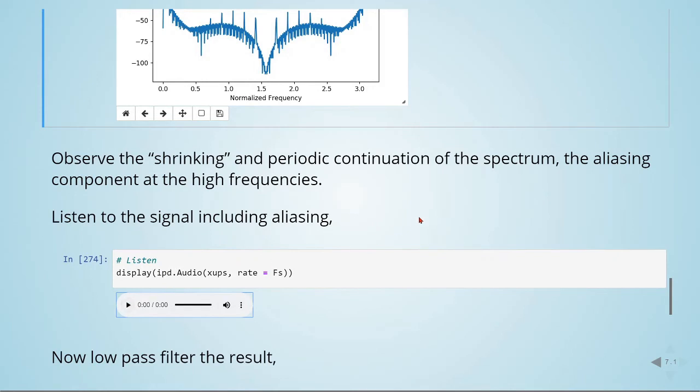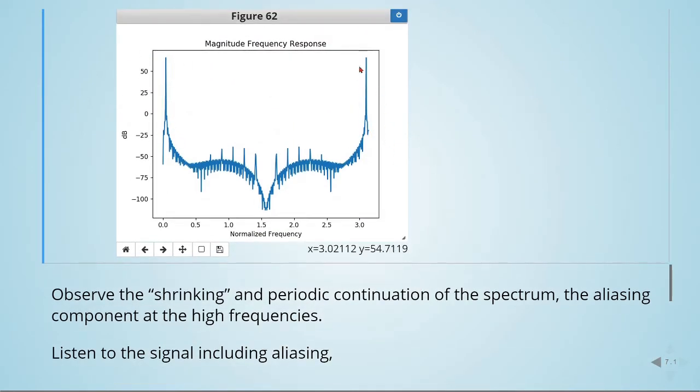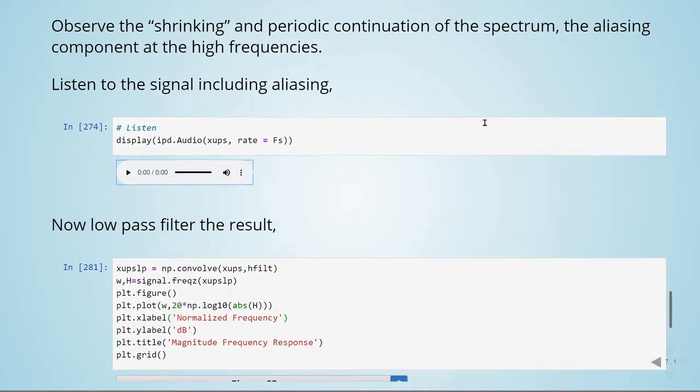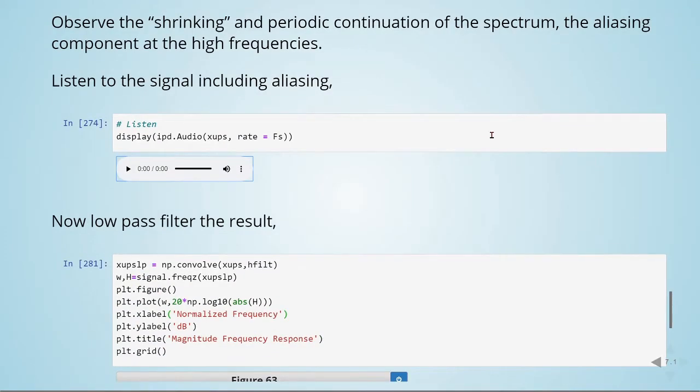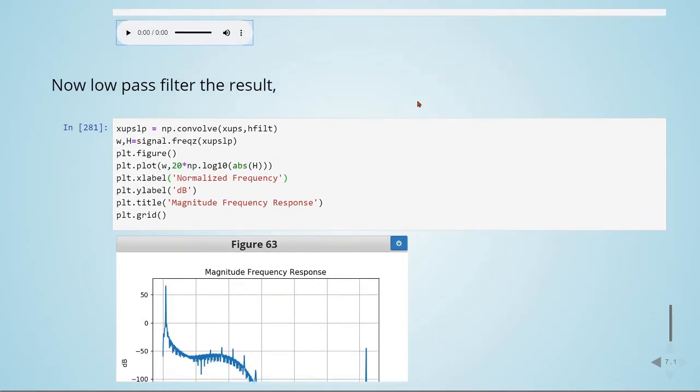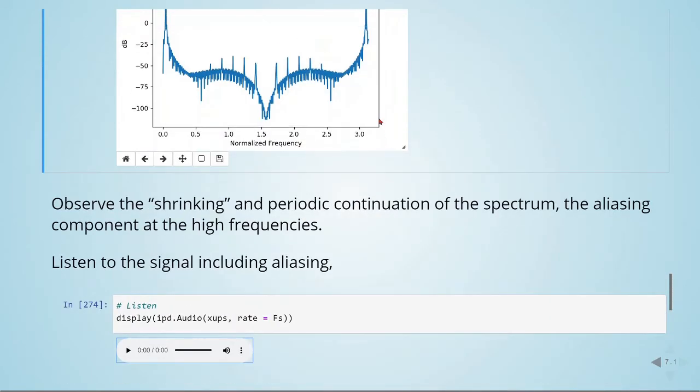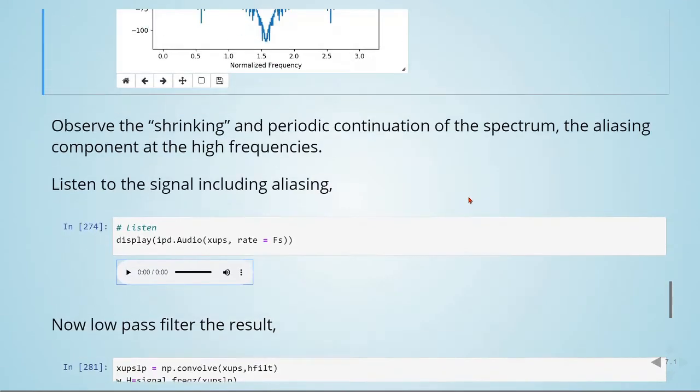It's difficult to hear aliasing here because with my headphones or my computer speakers this is very hard to reproduce these high frequencies, but the aliasing components are here and we must get rid of them. We will low pass these results, so now we will low pass again using the same filter.